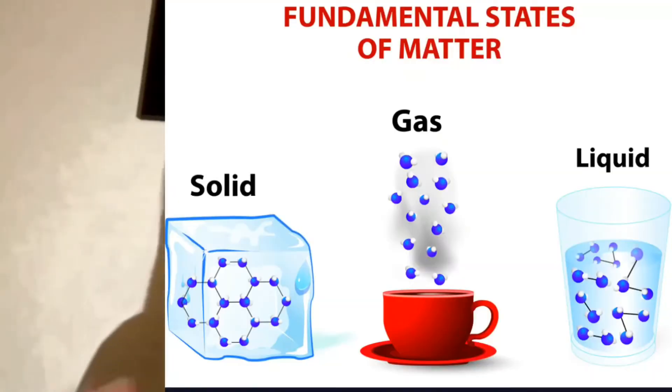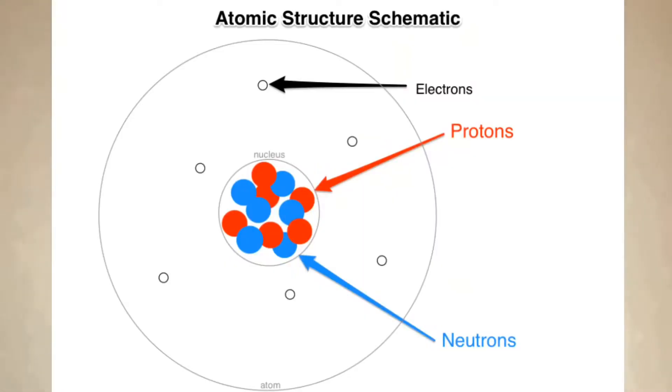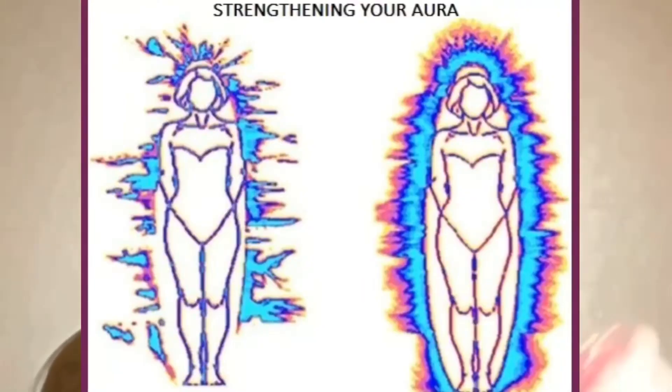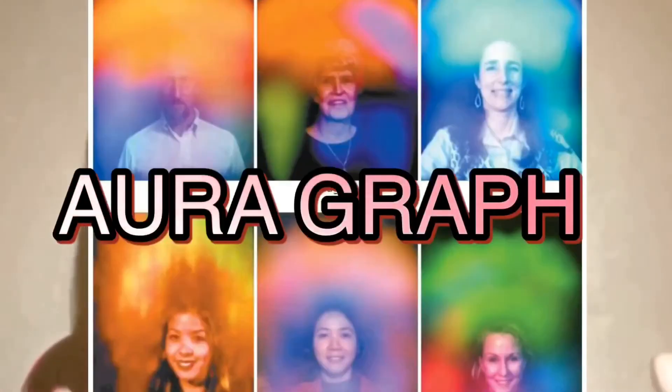Just like color and sound, we each have a very specific vibrational frequency that we emit and put off — this is considered our personal vibe or aura. You are going to be drawn to a crystal electromagnetically that your aura resonates with the most, or needs the most.